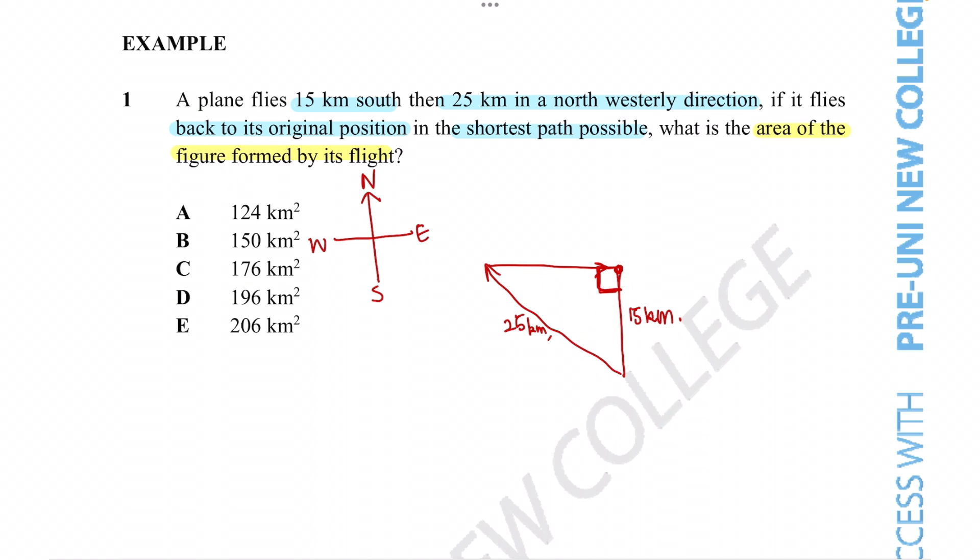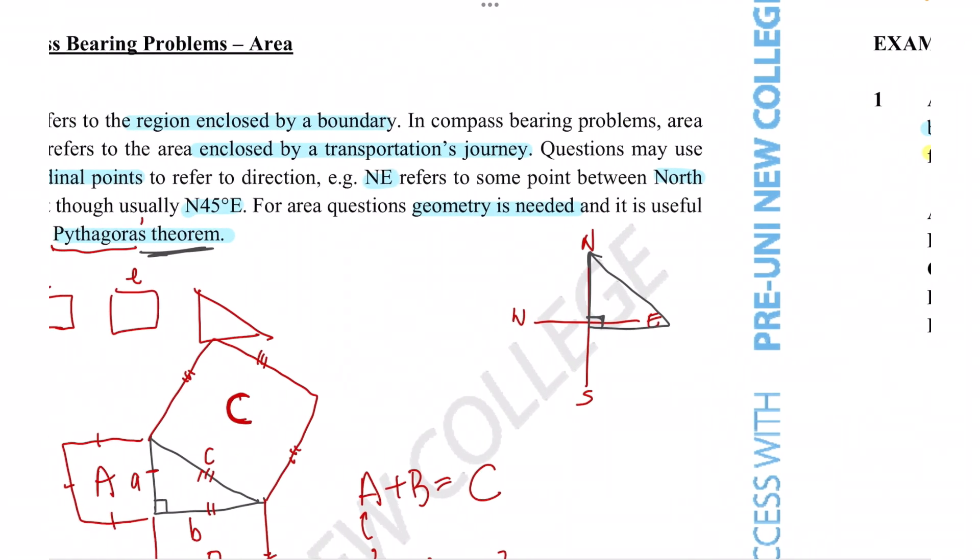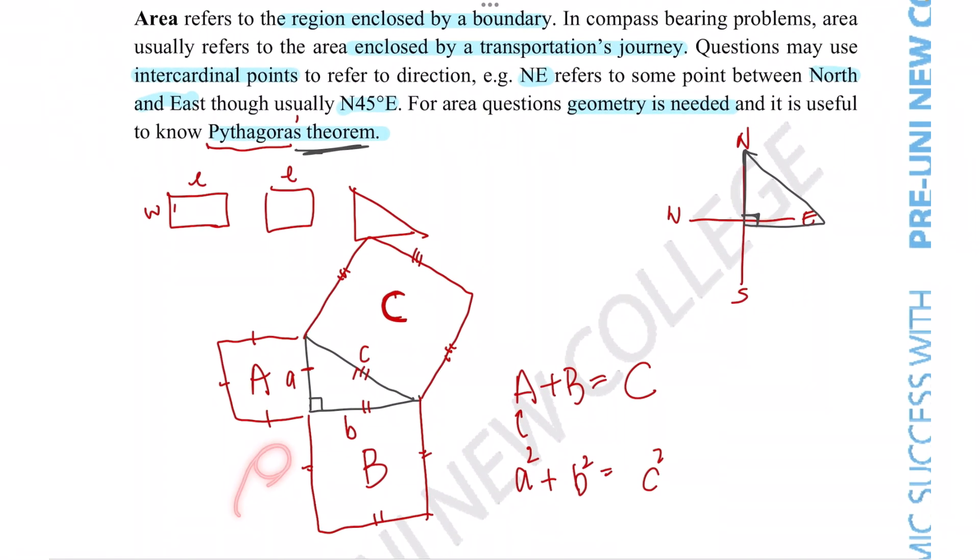And to figure out the area of a triangle, we know the formula is half times the base times by the height. Now we're given the height of the triangle, but we're actually not given the length of the base. So we can't just use 25 kilometres because we know these are different lengths. So how do we figure out that missing length of the triangle? Well, that is exactly where Pythagoras' theorem comes into play.